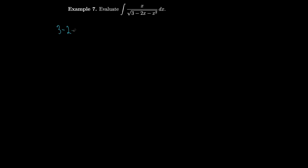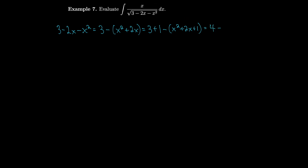In this example, we have the integral of x / √(3 − 2x − x²), where there's a 2x in the middle getting in the way. But we can still do trig substitution if we complete the square first. We look at 3 − 2x − x², which equals 3 − (x² + 2x). Adding and subtracting 1: that's (3 + 1) − (x² + 2x + 1) equals 4 − (x + 1)².